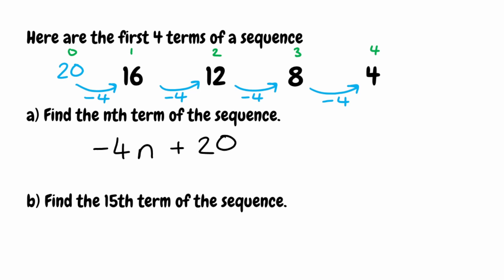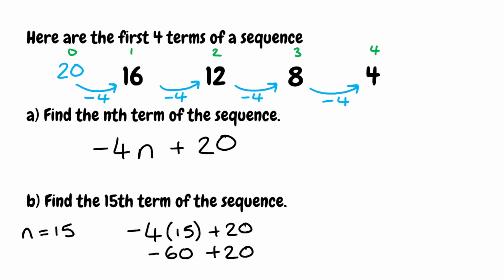For the last part we want to find the 15th term. Because we're looking for term number 15, we substitute n equal to 15 into our expression: negative 4 times 15 plus 20. Negative 4 multiplied by 15 gives negative 60, then we add 20, which leaves us with negative 40. So the 15th term in this sequence is negative 40.